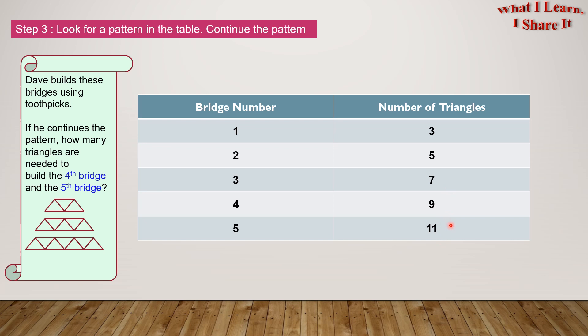So if we apply this rule in the next two bridges, 4th and 5th, it actually makes sense. So the 4th bridge will have 9 triangles, and the 5th bridge will have 11 triangles.